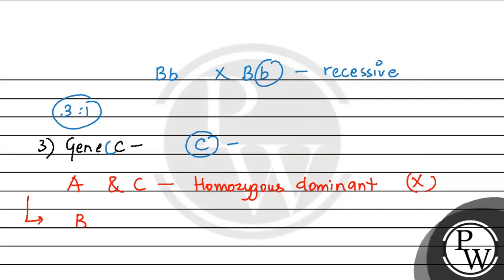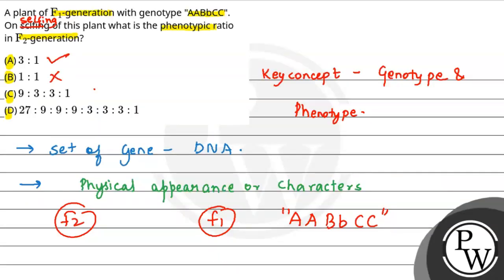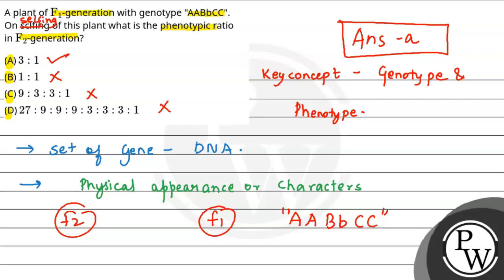The variation comes only from gene B. When we cross Bb × Bb, we get the ratio 3:1 — 3 dominant to 1 recessive phenotype. Therefore, the phenotypic ratio in the F2 generation is 3:1, which means the correct answer is option one, 3:1. The rest of the options are incorrect.